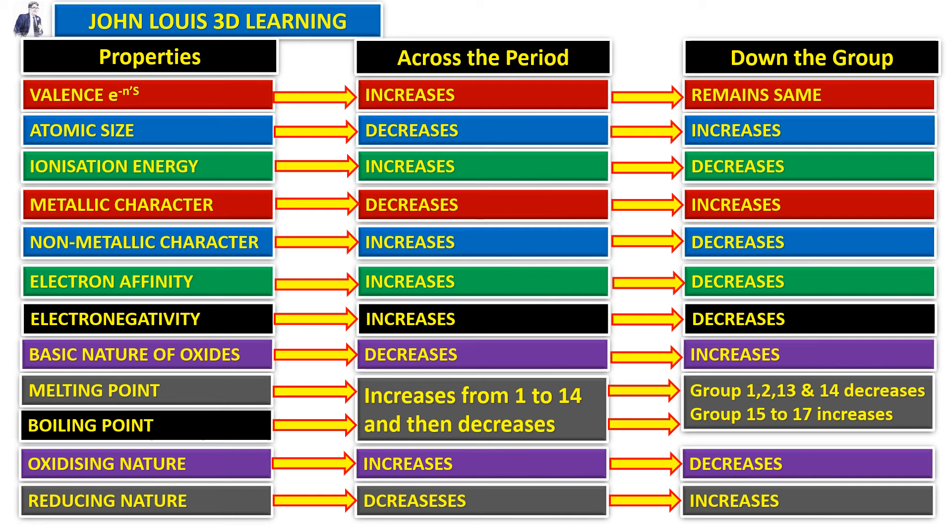So this is the summary of the various periodic properties. The first column lists the properties, the middle column shows what happens when we move across the period from left to right, and the last column shows what happens when we go down from top to bottom of the periodic table.